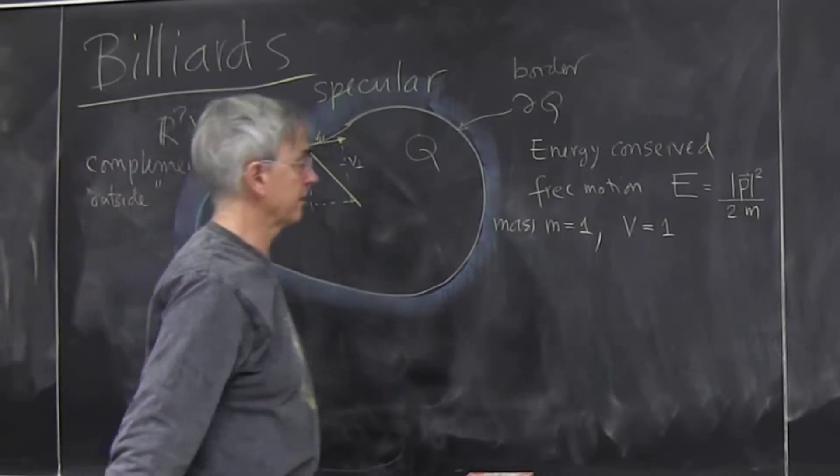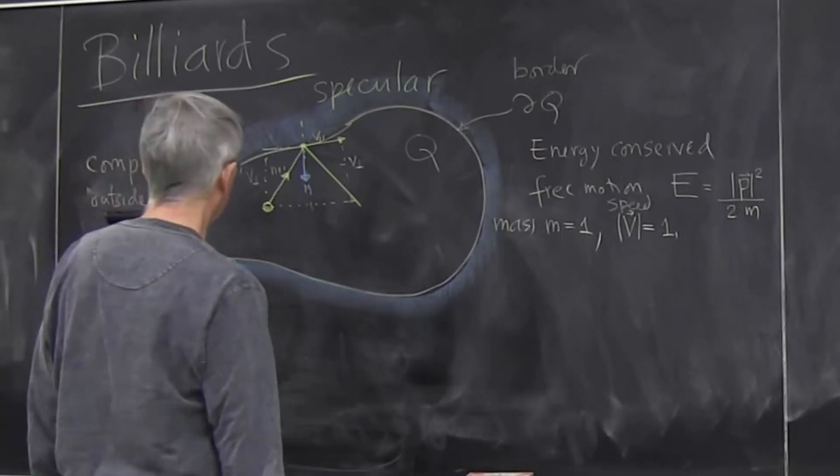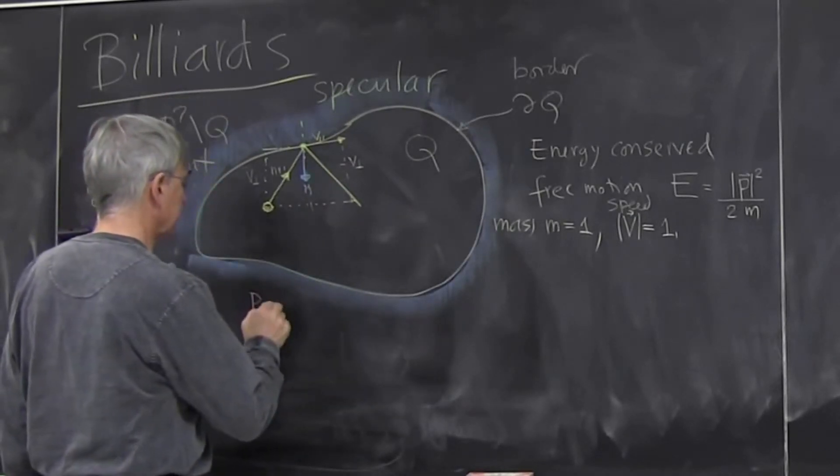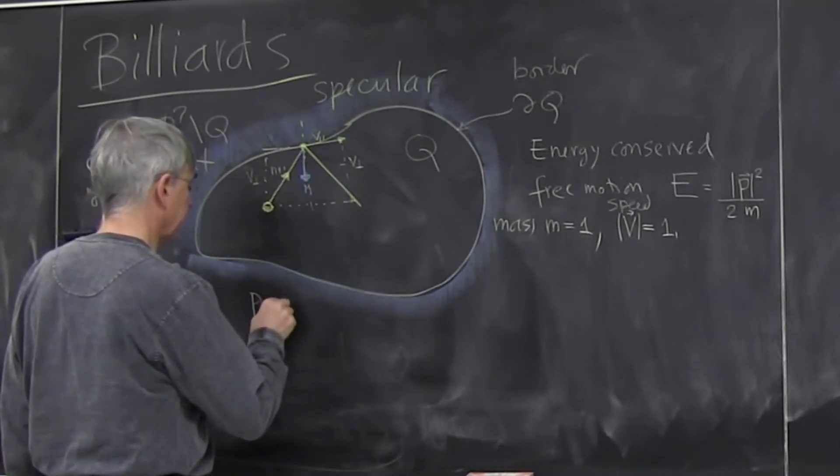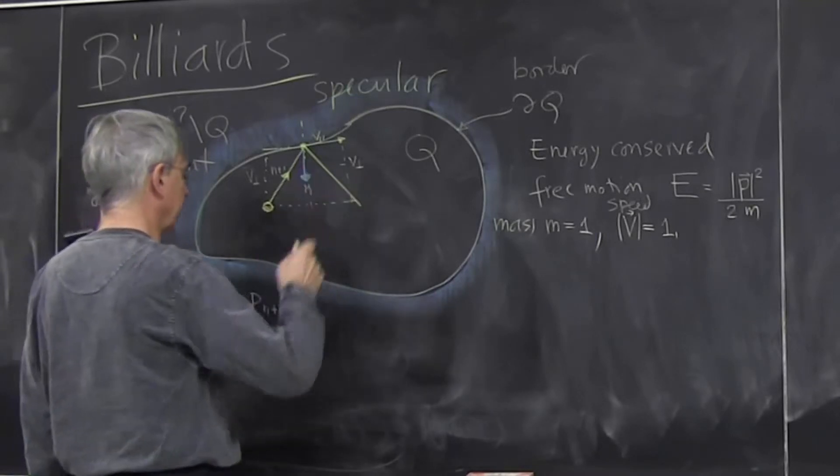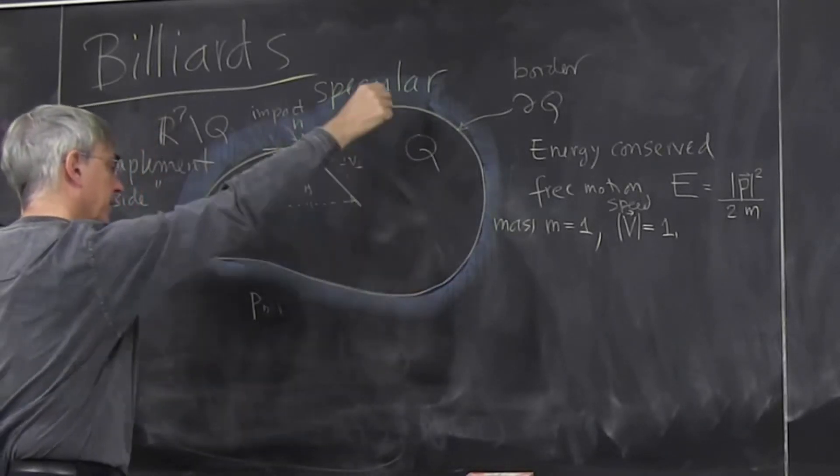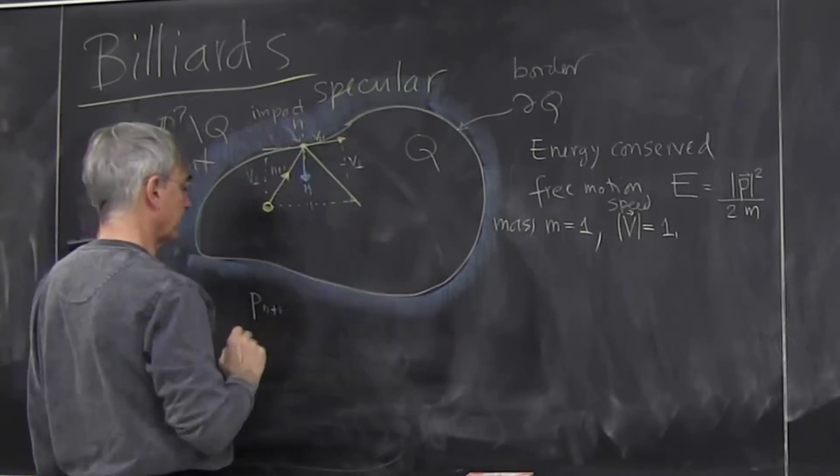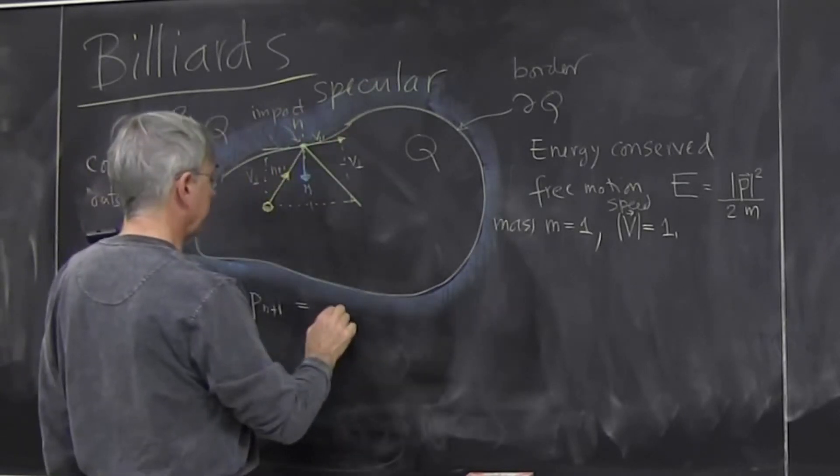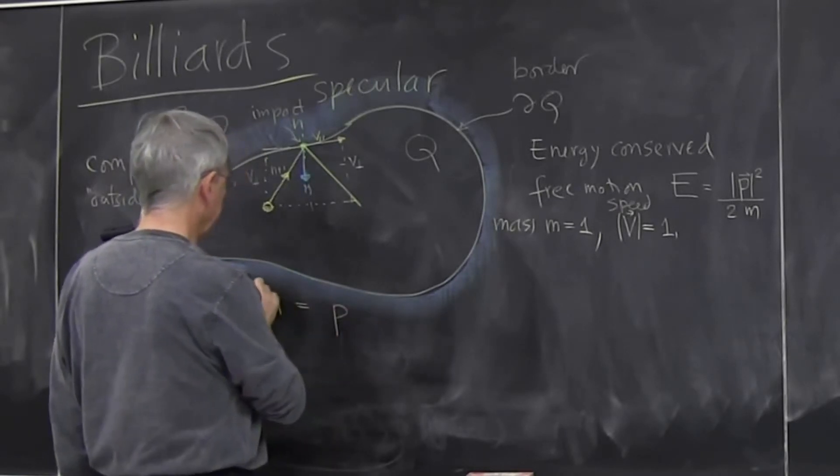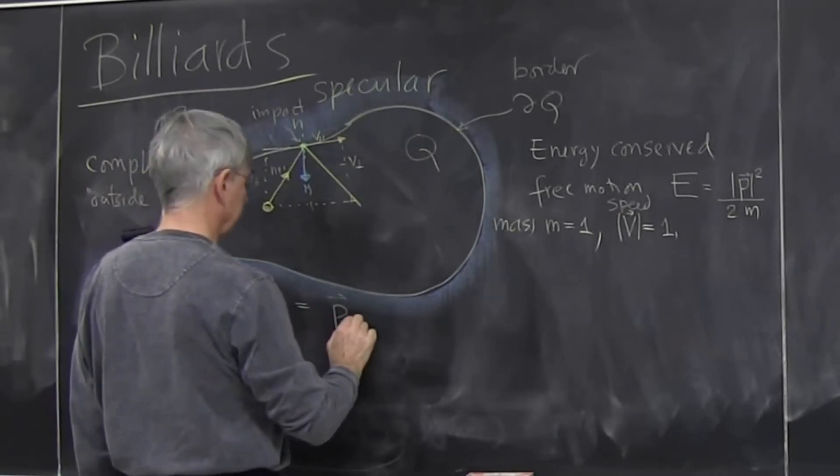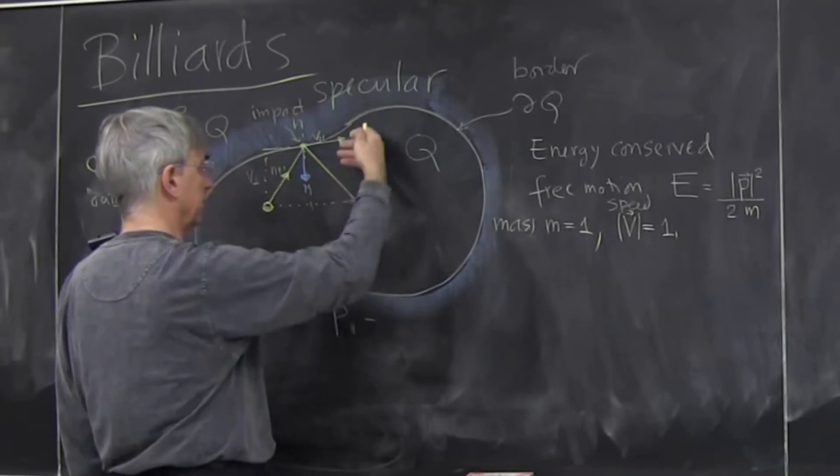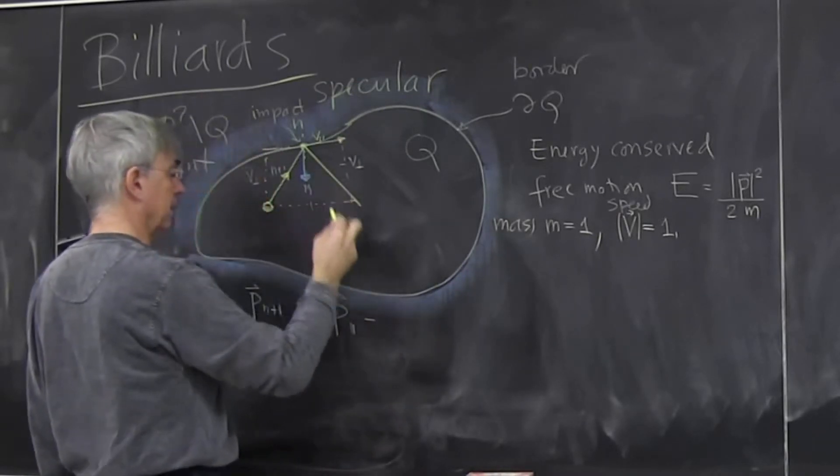Whenever I talk about the time that elapses from being here and being there, that's actually the same as the length because velocity is one. Then the law of reflection: momentum at time n plus one, so after the impact - we count first impact, second impact, third impact, fourth - so the time is integer time which is naturally defined.